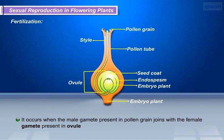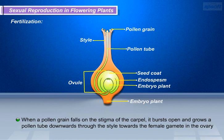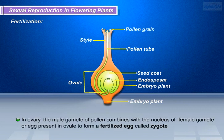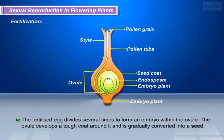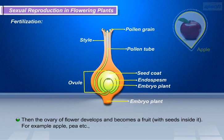Fertilization occurs when the male gamete present in the pollen grain joins with the female gamete present in the ovule. When a pollen grain falls on the stigma of the carpel, it bursts open and grows a pollen tube downwards through the style towards the female gamete in the ovary. A male gamete moves down the pollen tube. The pollen tube enters the ovule in the ovary. The tip of the pollen tube bursts open and the male gamete comes out. In the ovary, the male gamete combines with the nucleus of the female gamete or egg present in the ovule to form a fertilized egg called zygote. The fertilized egg divides several times to form an embryo within the ovule. The ovule develops a tough coat around it and is gradually converted into a seed. Then the ovary of the flower develops and becomes a fruit with seeds inside it, for example apple, pea, etc.